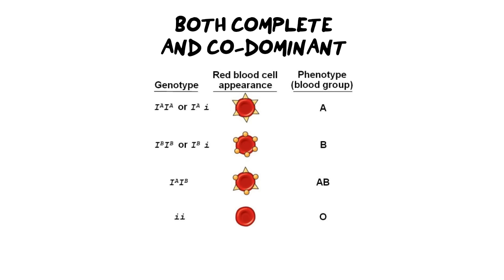Another interesting type of dominance you'll need to know for final exams is blood grouping dominance. What's interesting about blood groups is that some are both completely dominant and co-dominant. A and B are co-dominant to one another because you get an AB blood group, so they can work together. However, O is recessive to everyone else, giving us an example of complete dominance. I'll produce a separate video going into detail on this.